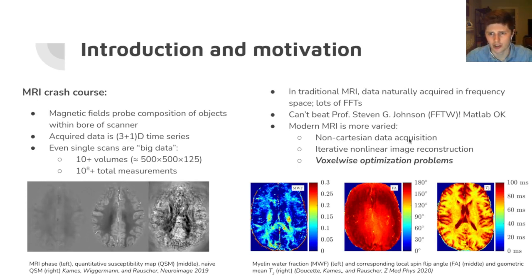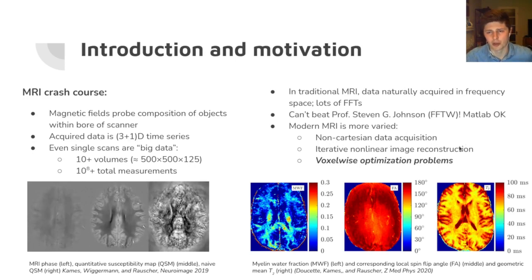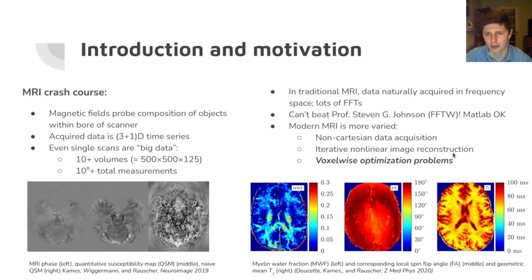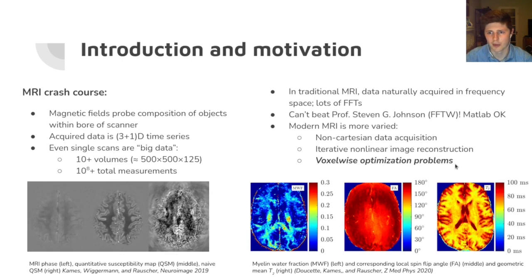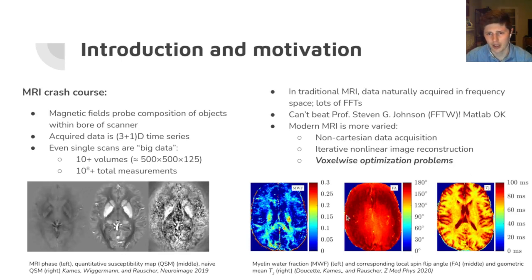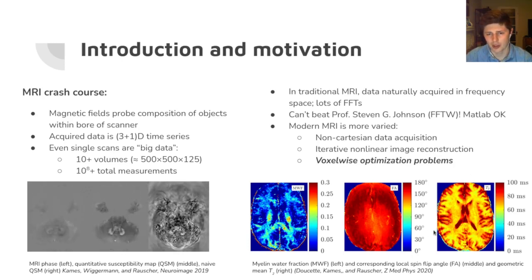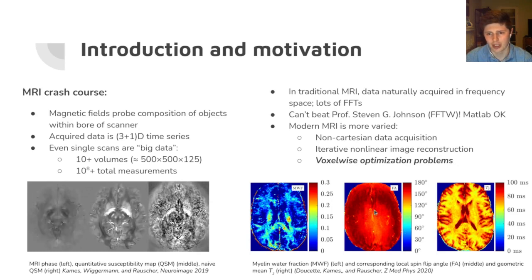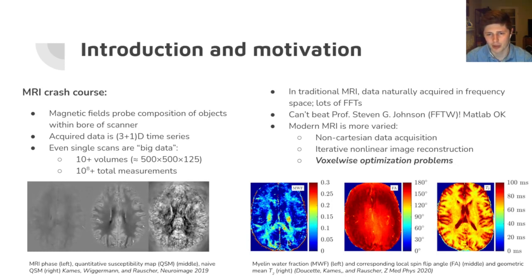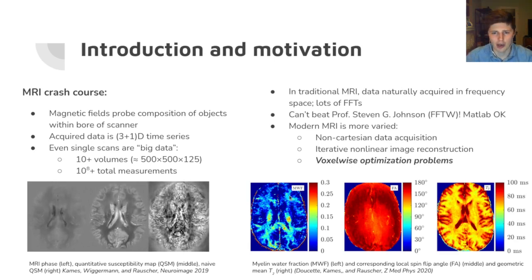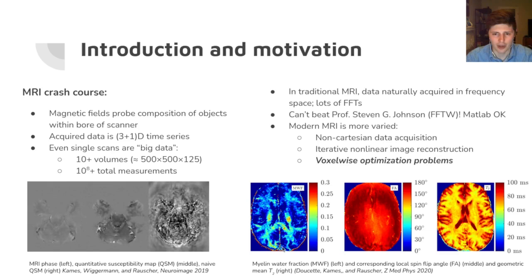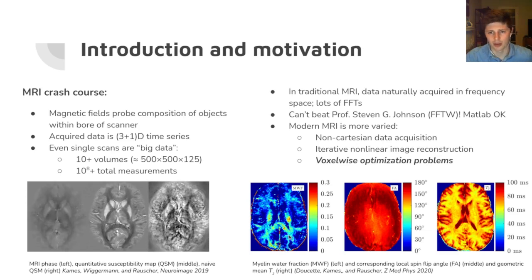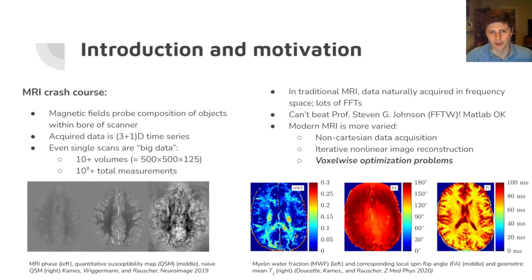So we have non-Cartesian data acquisitions — maybe non-uniform Fourier transforms or other fancy interpolation schemes — iterative non-linear image reconstructions, and in this talk we're going to focus particularly on voxel-wise optimization problems. In fact, these images on the bottom here were generated by solving an optimization problem at each point in the brain. This will be the focus of our talk: how are we going to speed up these problems? You have to do them massively in parallel, and they are very hard to write fast in dynamically interpreted languages like MATLAB or Python.